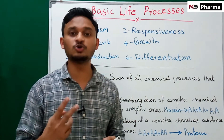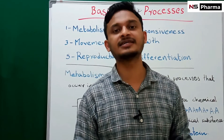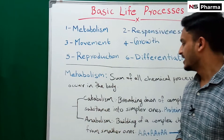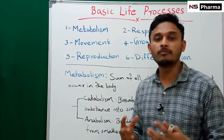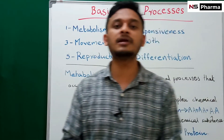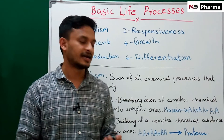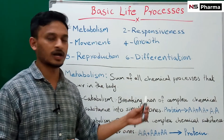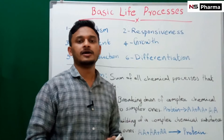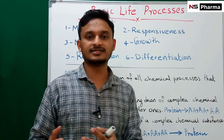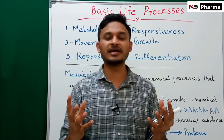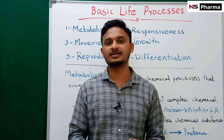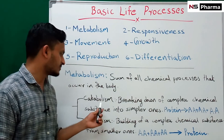Metabolism can be categorized into two phases. The first is catabolism. Catabolism is the breaking down of complex chemical substances into simpler ones. For example, protein is broken down into different amino acids — protein is the complex substance and amino acids are the simpler ones.